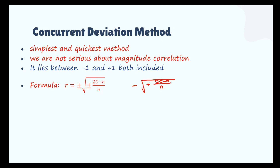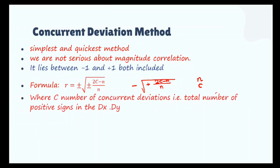What are C and N? N means how many observations you are comparing. C means, out of these N observations, how many observations are having concurrent deviation. As the name suggests, C means how many have concurrent deviation. Concurrent means together they are deviating — if one is increasing, the other is also increasing; if one is decreasing, the other is also decreasing.